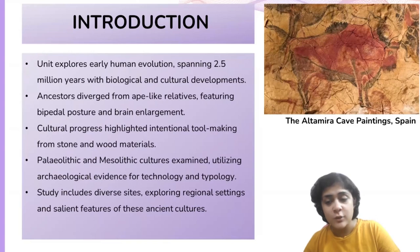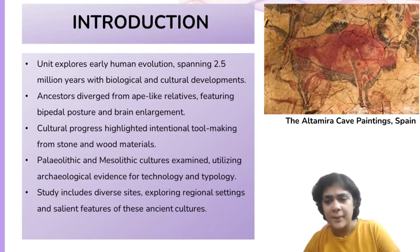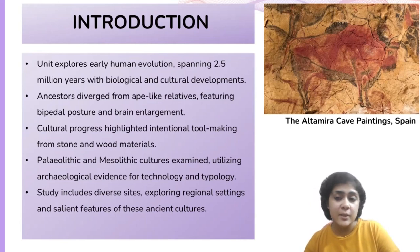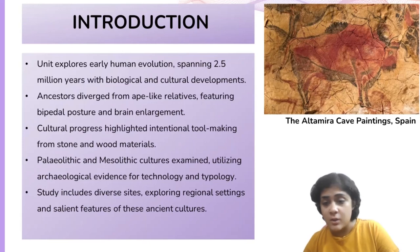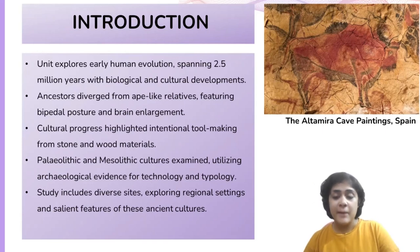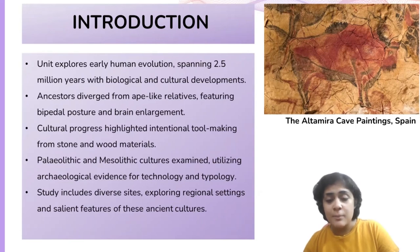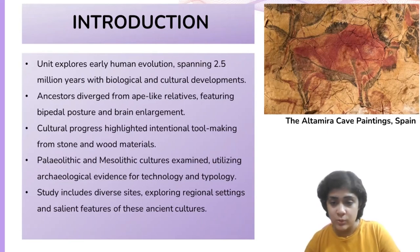In this unit we will explore the earliest phase of human biological and cultural development, marking the period when our ancestors started to diverge from their prehistoric ape-like relatives. This fascinating journey spans approximately 2.5 million years, during which significant advancements occurred in terms of physical characteristics such as the adoption of a bipedal posture and brain expansion, and in cultural behaviors, particularly the deliberate crafting of tools from natural materials like stone and wood.